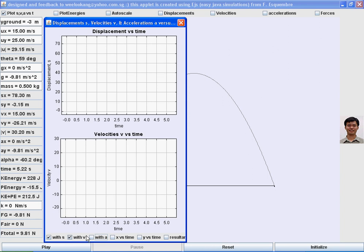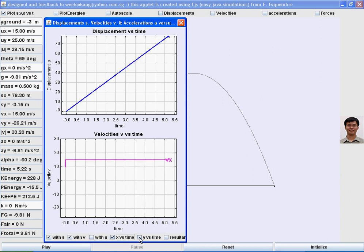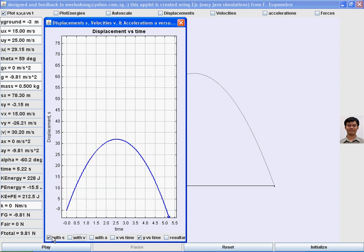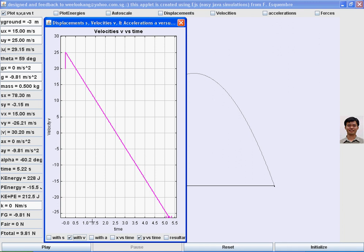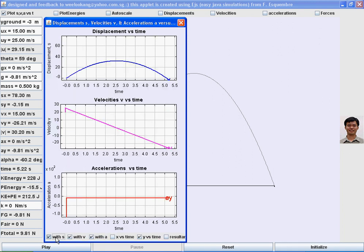If the graph is too small, you can even deselect acceleration or velocity or displacement. So now you can see that this is only showing the velocity and acceleration. If you want to see all the three graphs, just click on it.